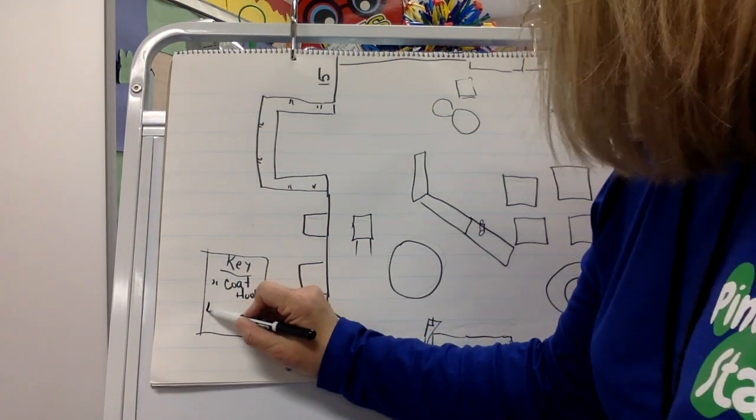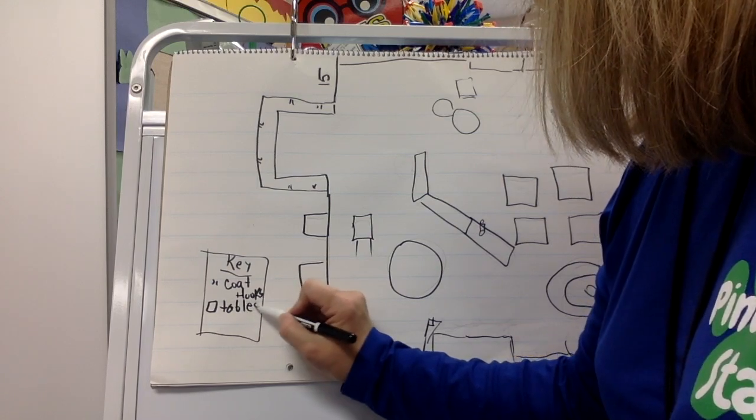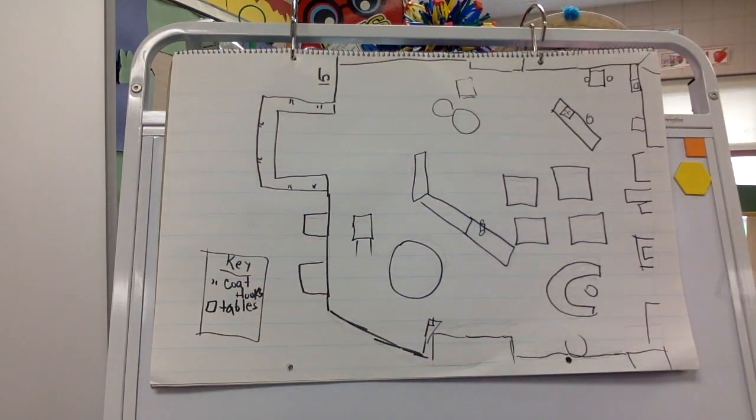Maybe you'll put squares like this, and you'll put tables. You could even color the tables. Remember, this table is red.